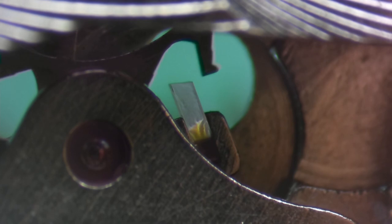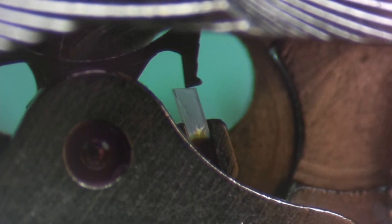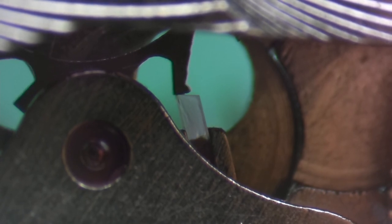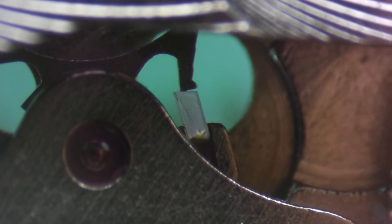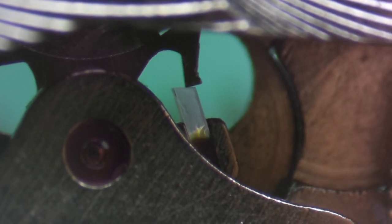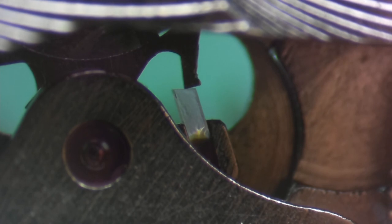And again, what we're looking for is we want it to be at least 50% of the width of the escape wheel tooth, a strong 50% up to about 75%, really no more than that. And as I'm looking at this, it looks to be a little bit light. It's definitely not half the width of the tooth.